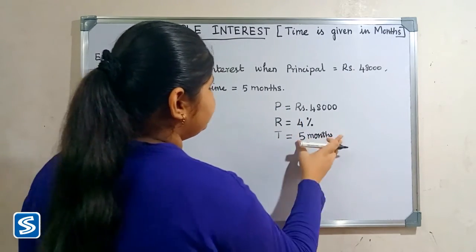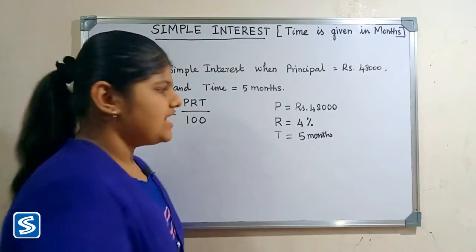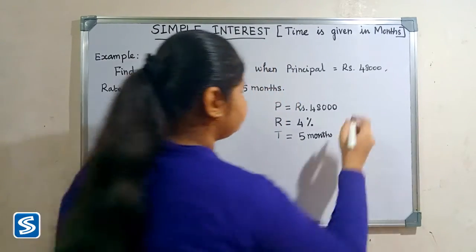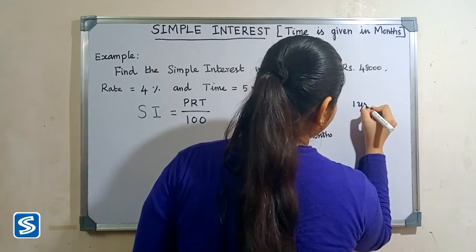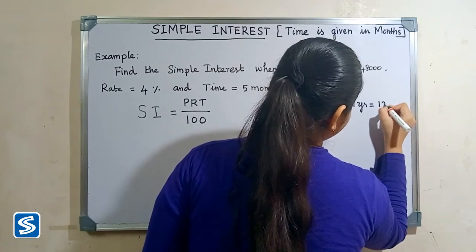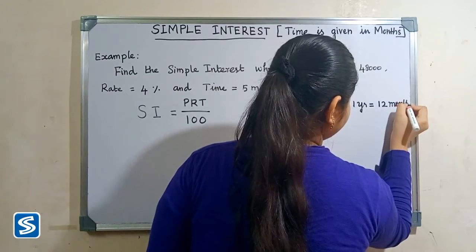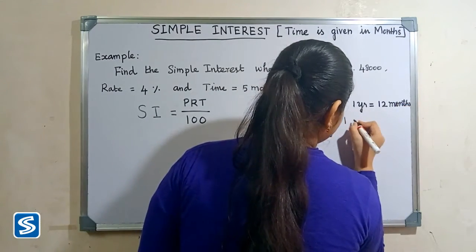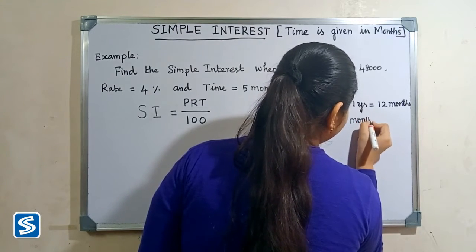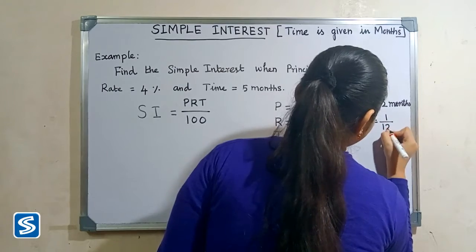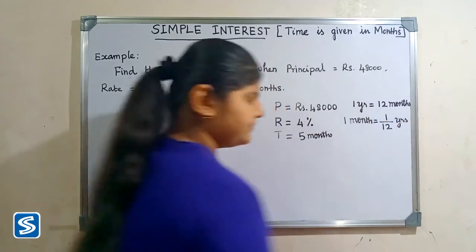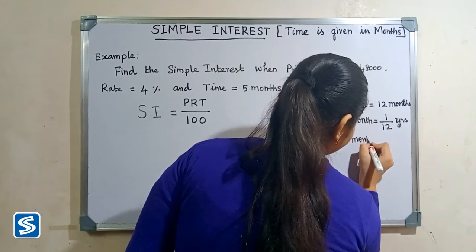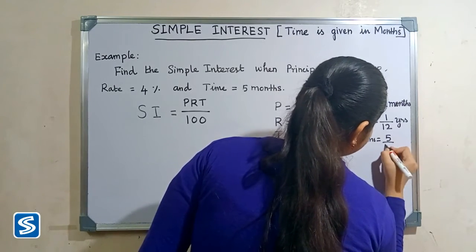You can see here the time period is in months, so now we have to convert this into years. We already know that one year is equal to 12 months, so 1 month is equal to 1 by 12 years. Therefore, 5 months is equal to 5 by 12 years.